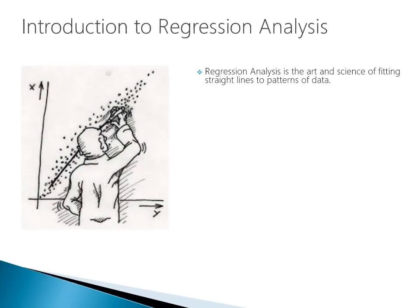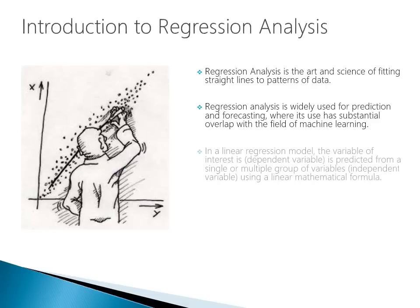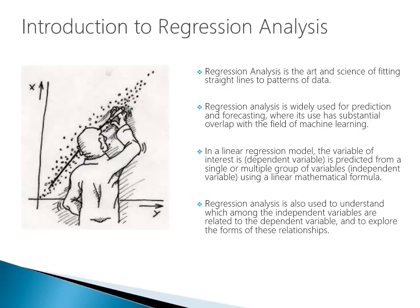Regression analysis is the art and science of fitting straight lines to patterns of data. It is widely used for prediction and forecasting, with substantial overlap with machine learning. In a linear regression model, the dependent variable is predicted from a single or multiple independent variables using a linear mathematical formula. Regression analysis is also used to understand which independent variables are related to the dependent variable and to explore the forms of these relationships.